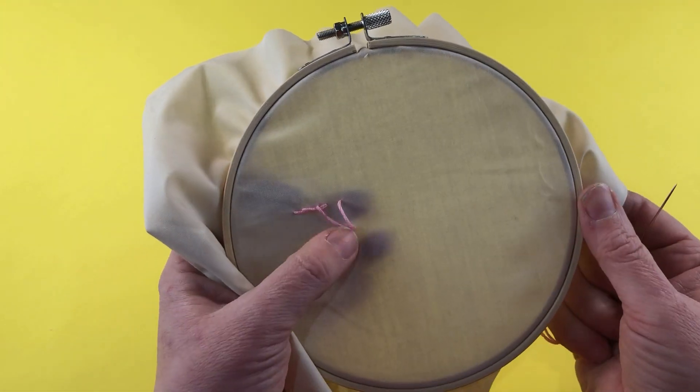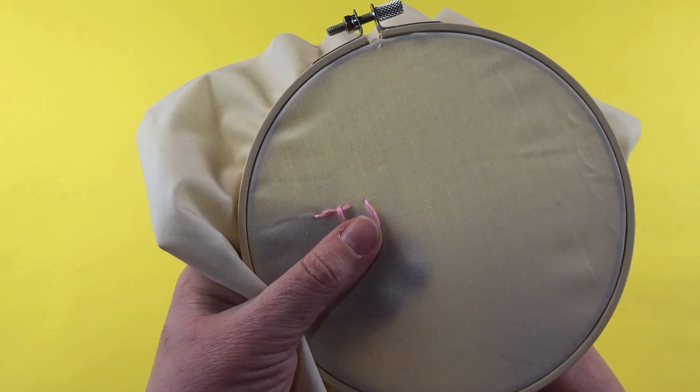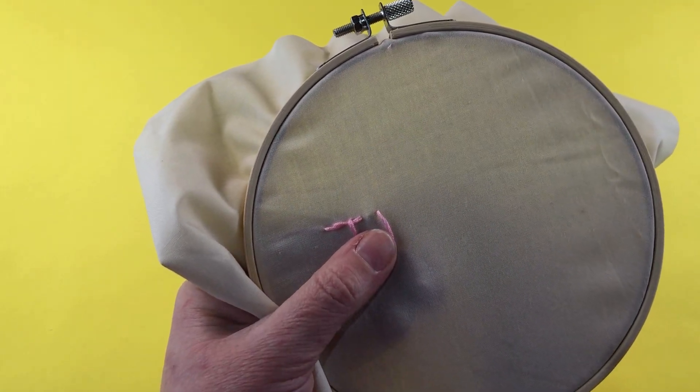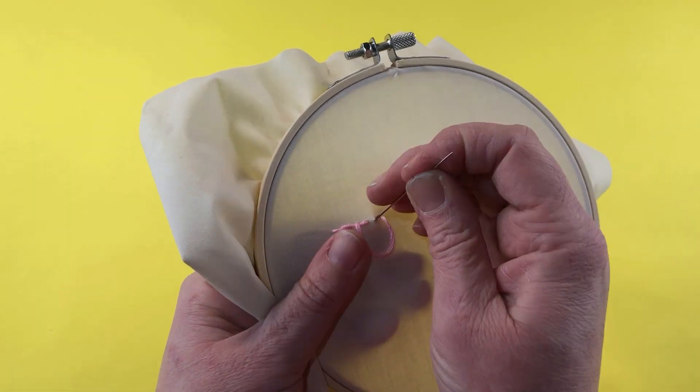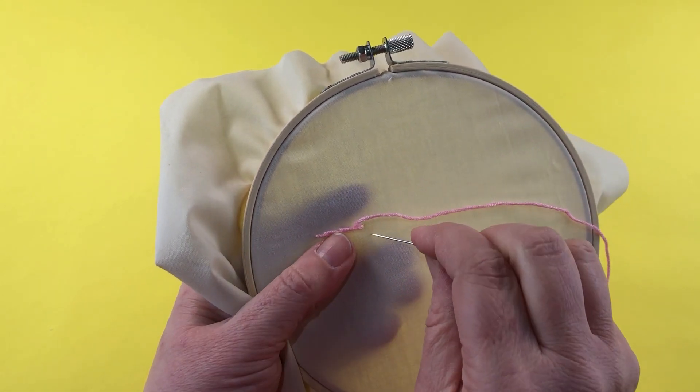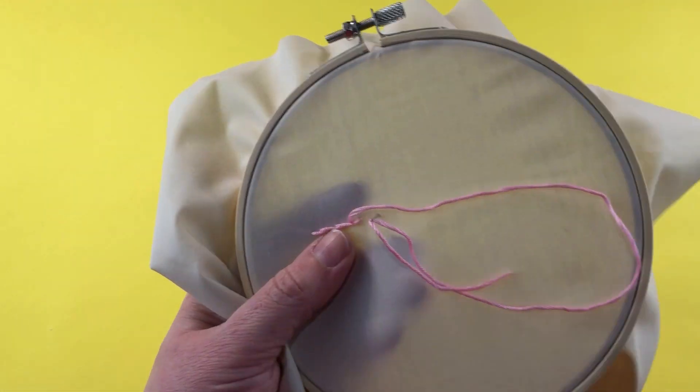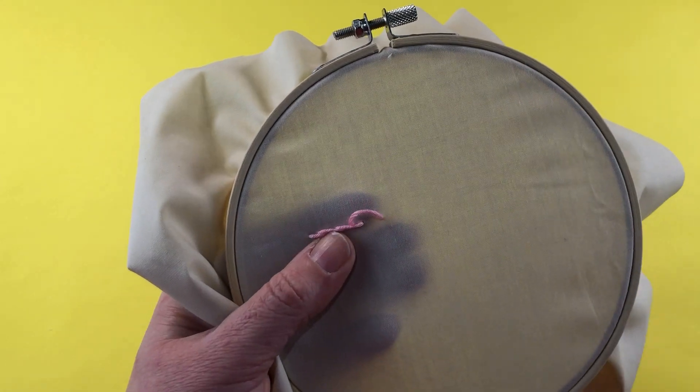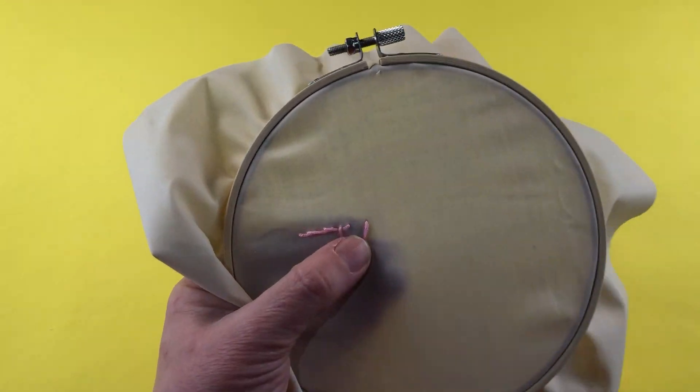Once you get going it's really simple to master. Again we're just going to leave a loop and come up halfway and then we're going to continue, and that is going to achieve us our stem stitch.